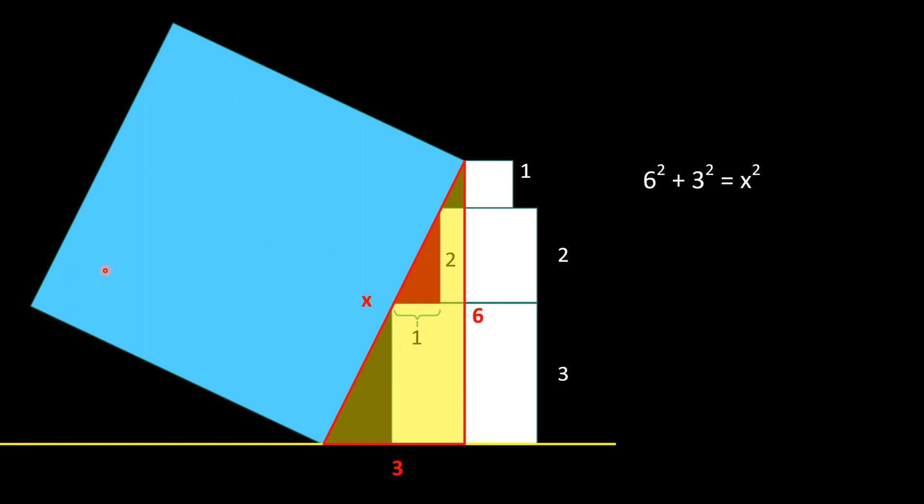Now let's come to our original problem: what is the area of this big blue square? It's simply x square, x multiplied by x, and x square is 6 square plus 3 square, that is 36 plus 9 or 45. So area is x square and 45.